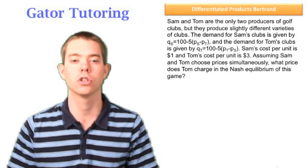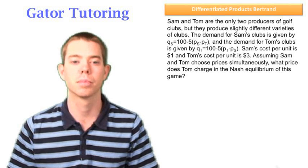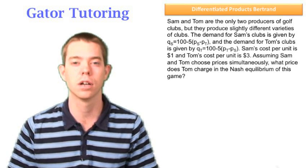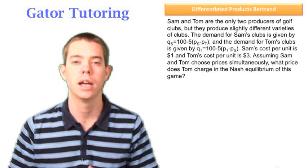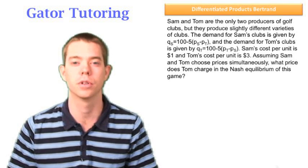Sam and Tom are the only two producers of golf clubs, but they produce slightly different varieties of clubs. It gives us Sam's demand function and Tom's demand function, and Sam's cost per unit and Tom's cost per unit.